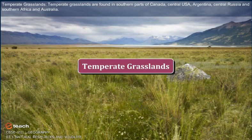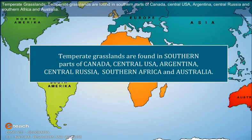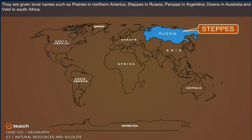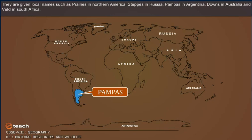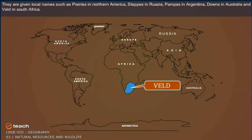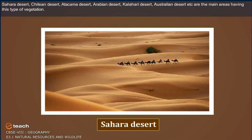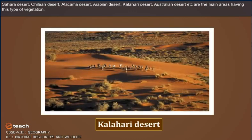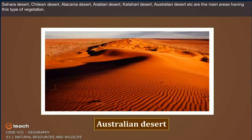Temperate Grasslands. Temperate grasslands are found in southern parts of Canada, Central USA, Argentina, Central Russia and Southern Africa and Australia. They are given local names such as Prairies in North America, Steppes in Russia, Pampas in Argentina, Downs in Australia and Veld in South Africa. Sahara Desert, Chilean Desert, Atacama Desert, Arabian Desert, Kalahari Desert and Australian Desert are the main areas of desert-type vegetation.